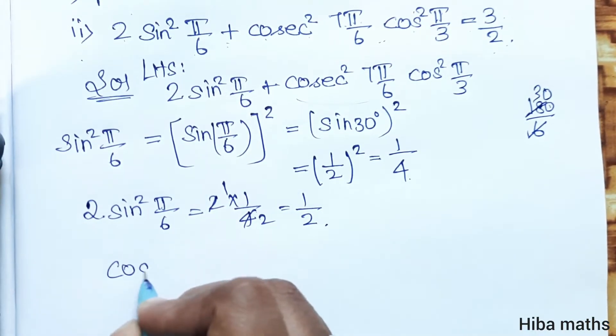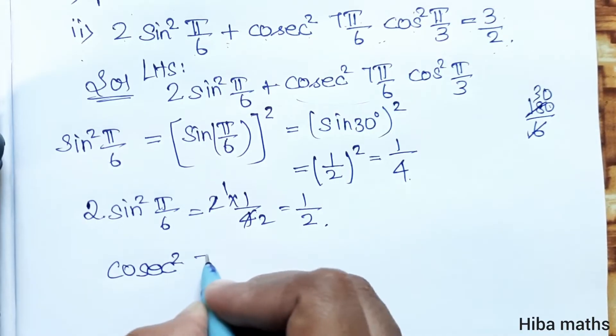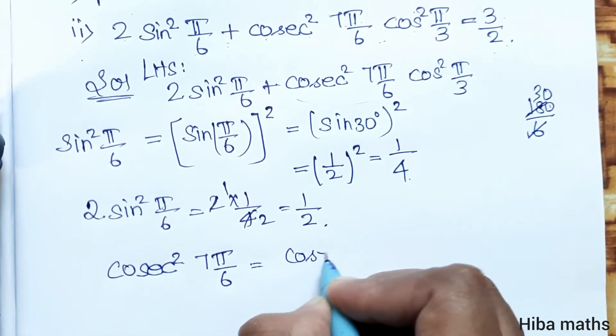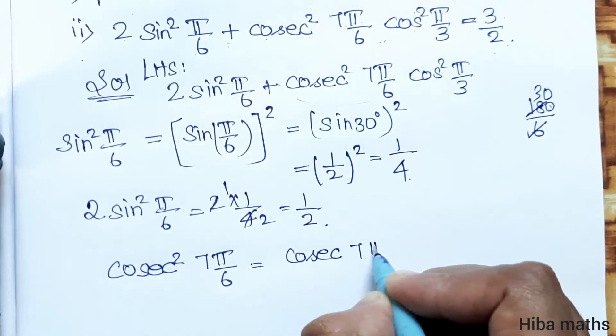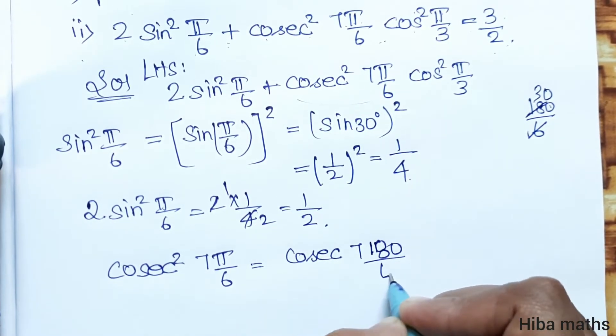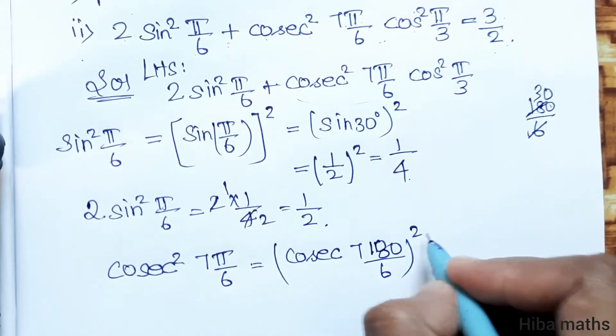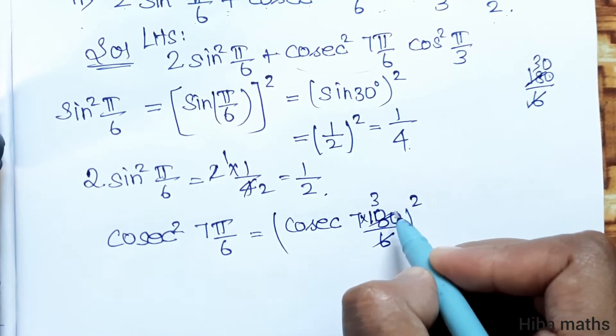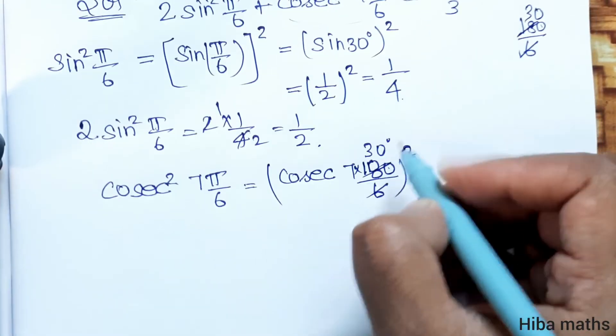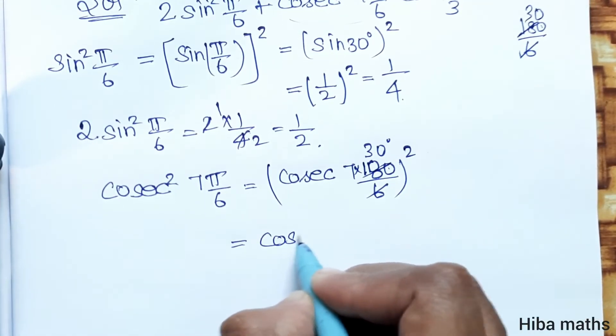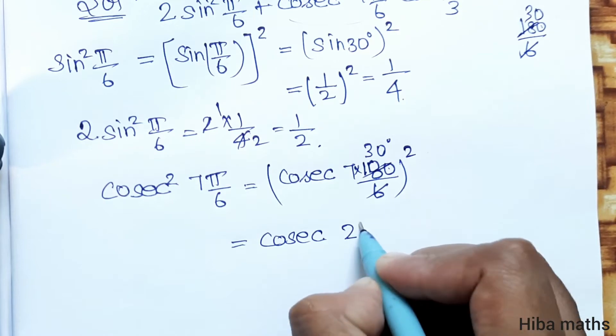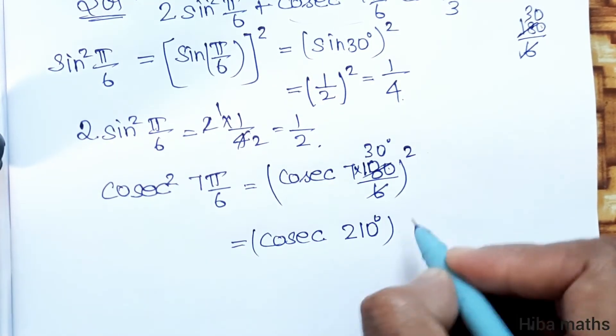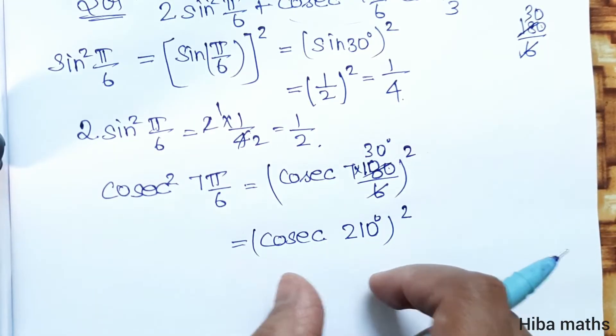Second term is cosec²(7π/6). This equals (7 × 180/6)² whole square. 6 × 3 = 18, so this equals cosec²(210°).